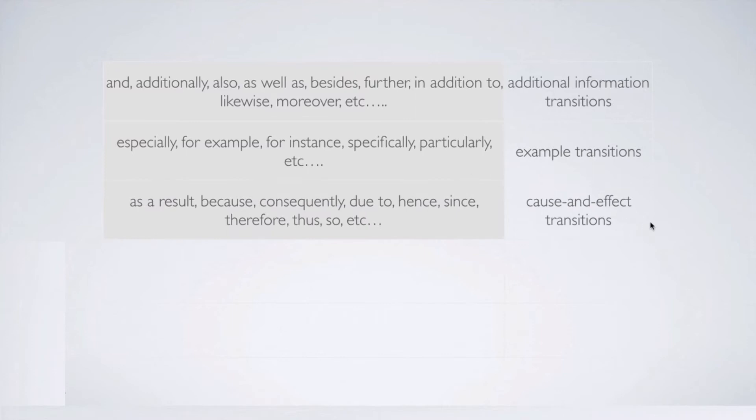The next transitions are cause and effect transitions. Examples of these transitions are: as a result, because, consequently, due to, hence, since, therefore, thus, so, etc. So if you see these transitions, it means that after them there will be cause and effect information — there will be an effect after a cause. So we need to look for a sentence where there was a cause, and then after it we will place this effect sentence.